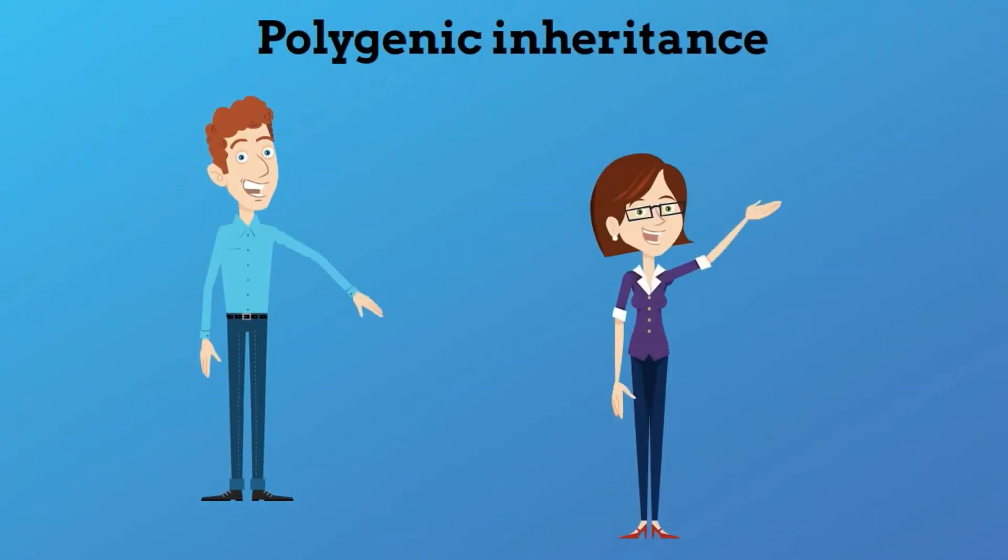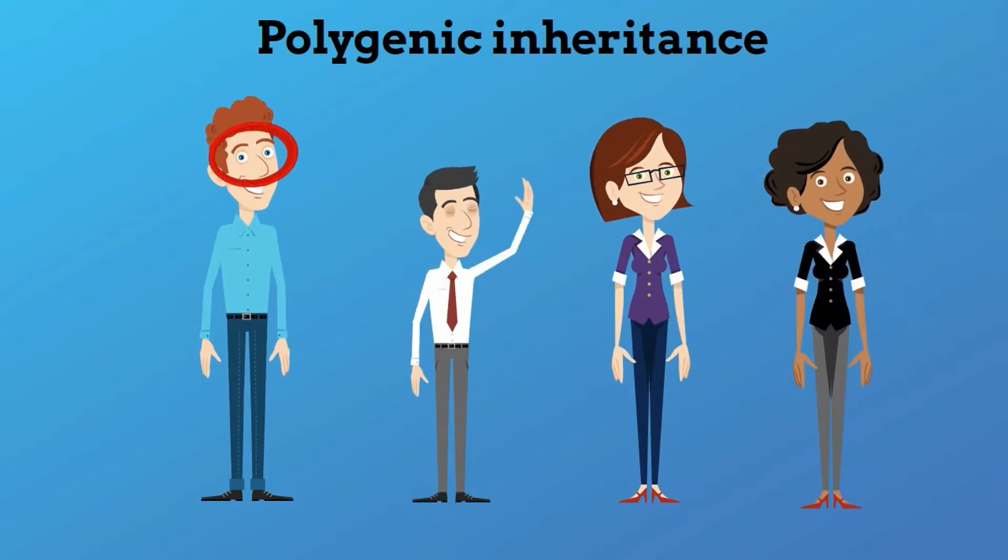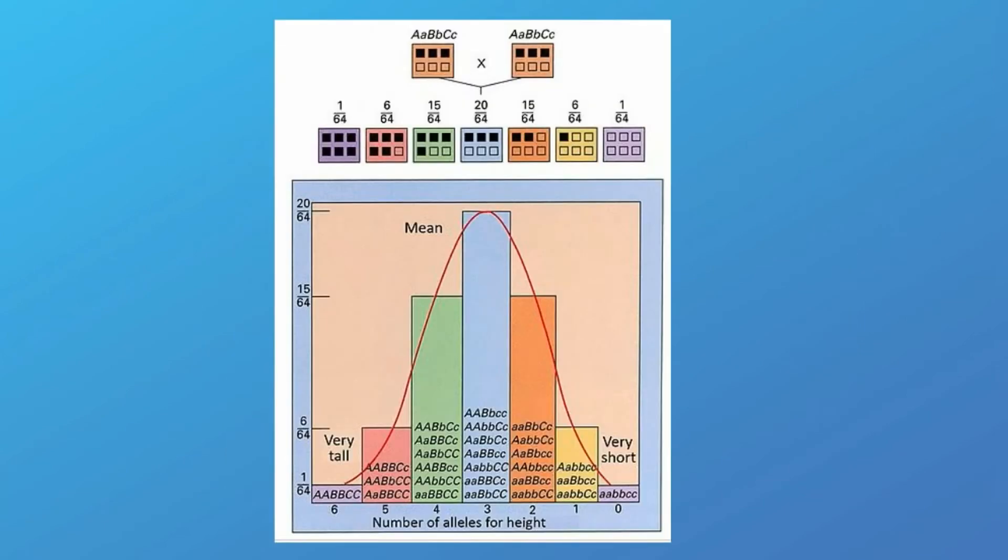And finally, some traits are controlled by multiple genes called polygenic inheritance. In humans, our height, skin color, and eye color are controlled by multiple genes. As a result, you have many more types or phenotypes. Notice in the chart the different combinations and results that are possible.